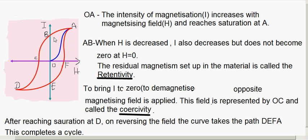To reduce this residual magnetism to 0, we have to apply H in the reverse direction. The reverse magnetizing field required to bring I to 0 is represented by OC in the figure. One complete cycle of magnetization and demagnetization completes here, forming the loop called the hysteresis loop.